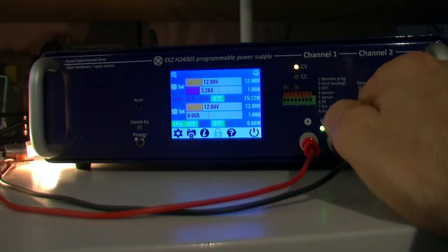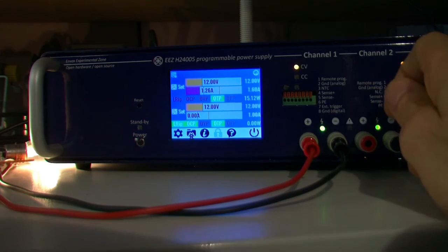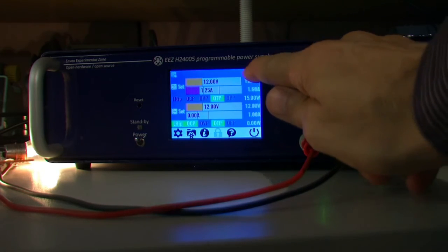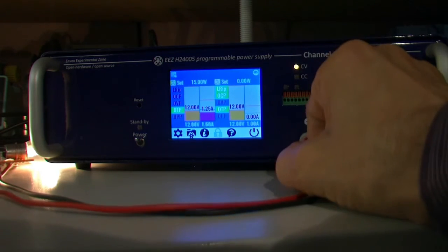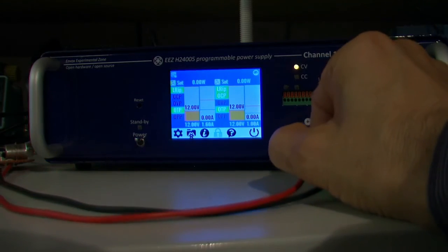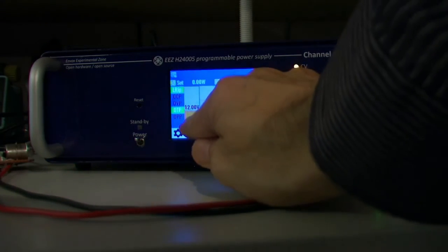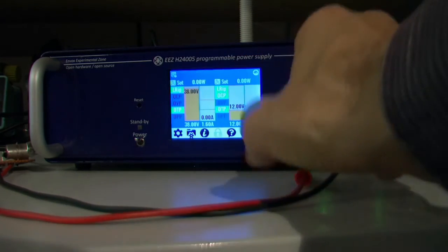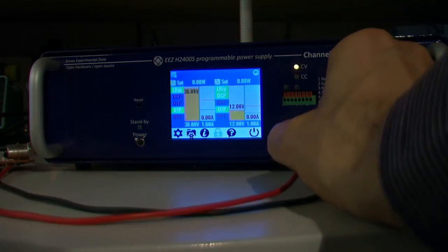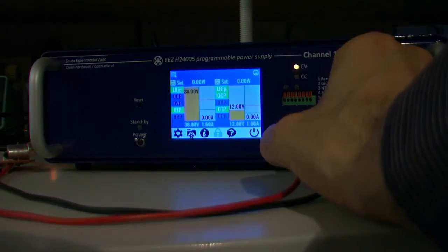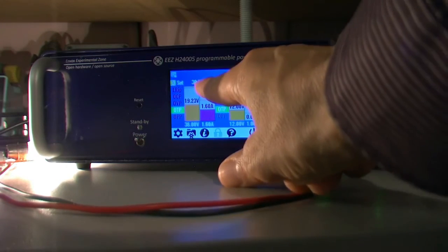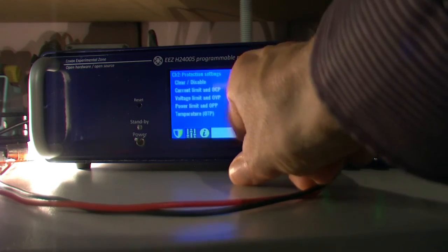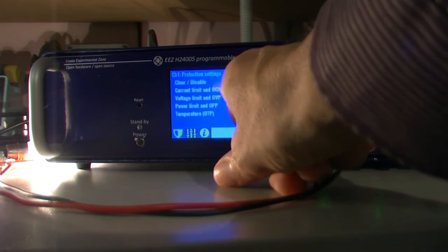If you don't like horizontal orientation, there is one more option, so you can go like this. Here we also have the power - this is channel 1, channel 2, settings for 1, 2, so everything is here.